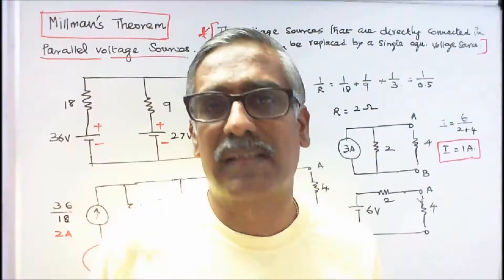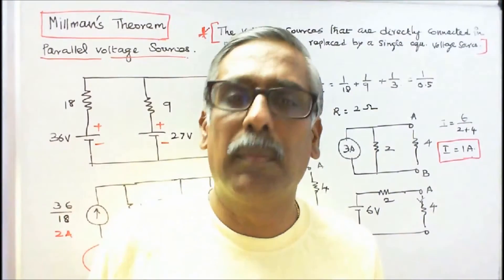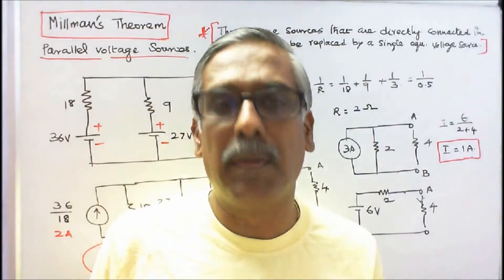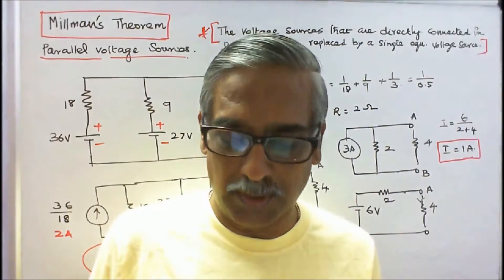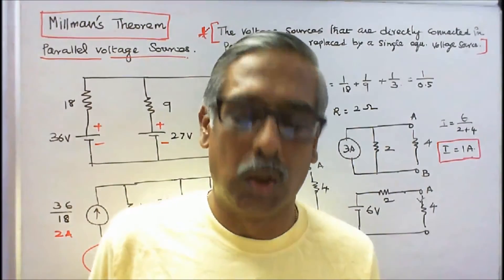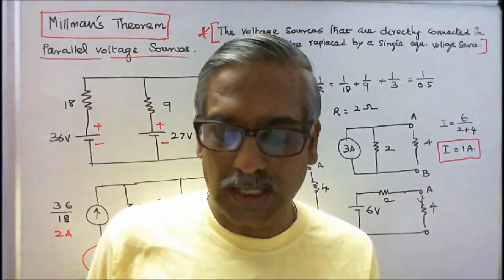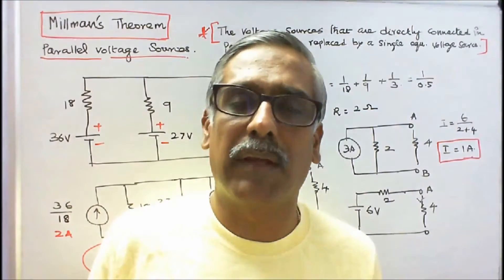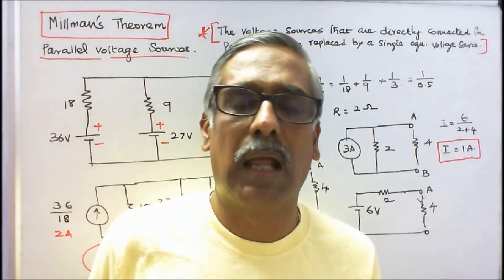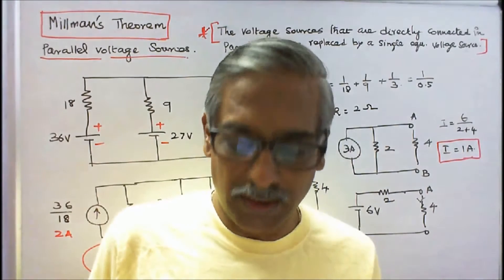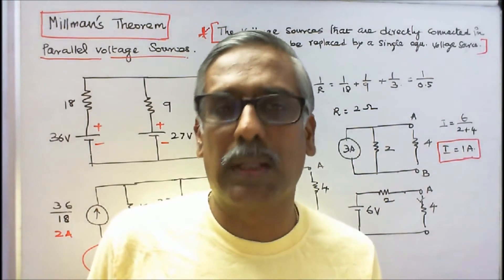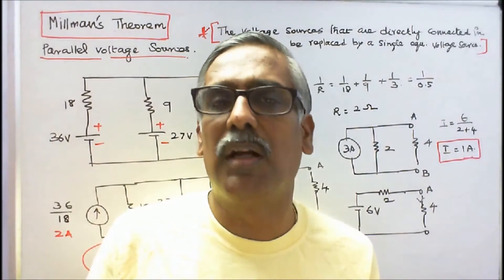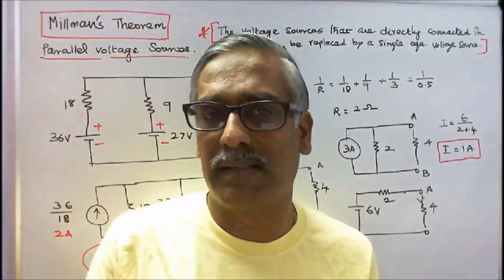Millman's Theorem: A number of current sources in parallel may be replaced by a single current source whose current strength is equivalent to the algebraic sum of individual source currents, and source resistance is equal to the parallel combination of individual source resistances.